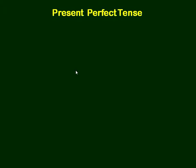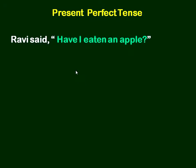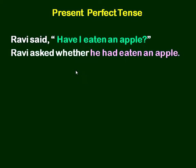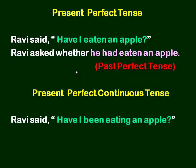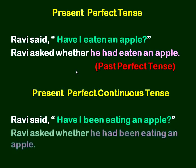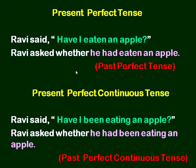Present perfect tense: Ravi said, 'Have I eaten an apple?' Ravi asked whether he had eaten an apple. So the present perfect tense changed into past perfect tense. Present perfect continuous tense: Ravi said, 'Have I been eating an apple?' Ravi asked whether he had been eating an apple. So present perfect continuous tense changed into past perfect continuous tense.